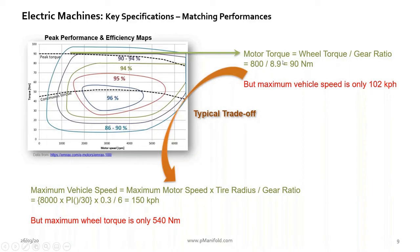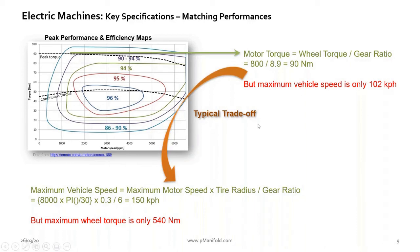For achieving our 800 Newton meter target at the wheel, the gear reduction ratio comes out to around nine. However, with a ratio of nine and a given maximum motor speed, the maximum possible vehicle speed would be around 100 kph. If that is acceptable, you're lucky, but typically this is a point where you have to trade off between maximum vehicle speed and acceleration at lower speeds. If you want to achieve a higher top speed with a ratio of six, the maximum wheel torque you can achieve drops to 540 Newton meters. If you want both, you need to come up with creative solutions.